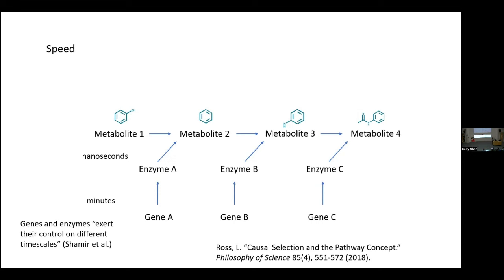Scientists refer to this: genes and enzymes exert their control on different timescales. Speed is relative to some timescale of interest — it doesn't make sense to say a cause is just fast or slow. This gene-to-enzyme causal relationship is very slow compared to nanoseconds, and super fast compared to a geological timescale — such as the timescale on which rocks are formed, mountains are built, or COVID spreads through the population.